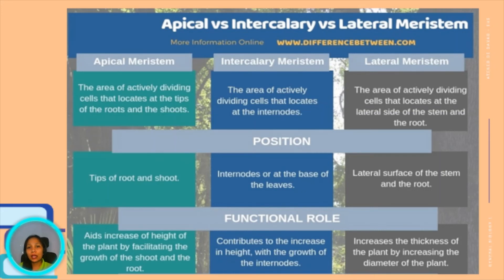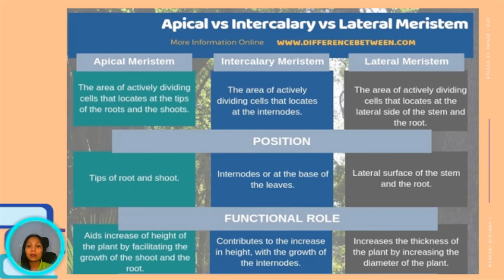Apical meristem is the area of actively dividing cells located at the tips of the roots and shoots. Intercalary meristem is the area of actively dividing cells located at the internodes or at the base of the leaves. Lateral meristem is the area of actively dividing cells located at the lateral side of the stem and roots. The functional role of apical meristem is that it aids in the increase of height of the plant by facilitating the growth of the shoot and root. Intercalary meristem contributes to the increase in height with the growth of the internodes, and lateral meristem increases the thickness of the plant by increasing its diameter.